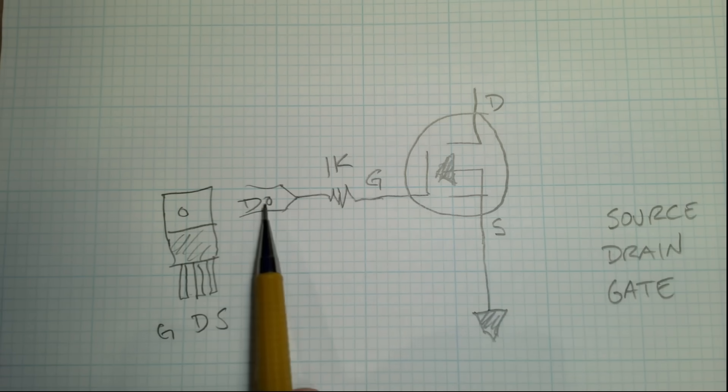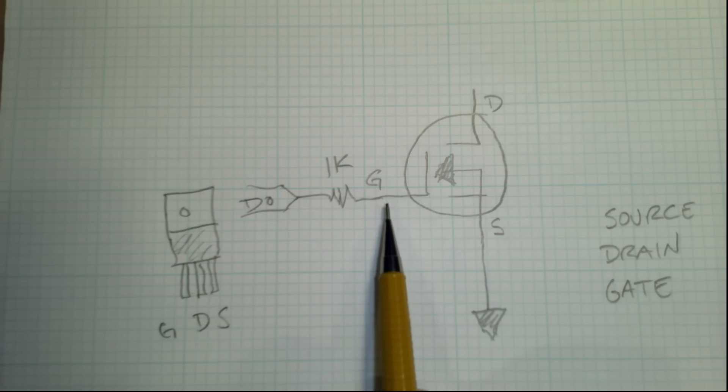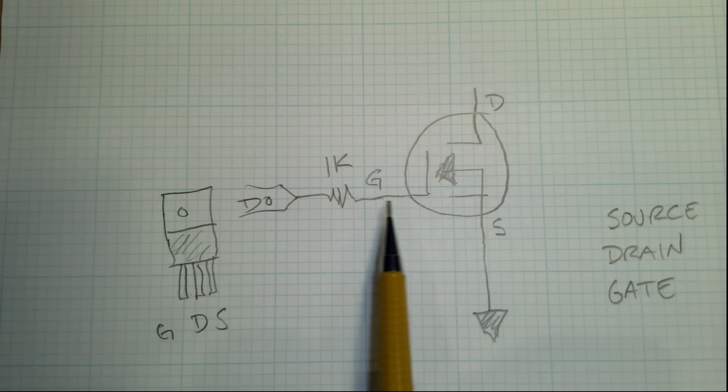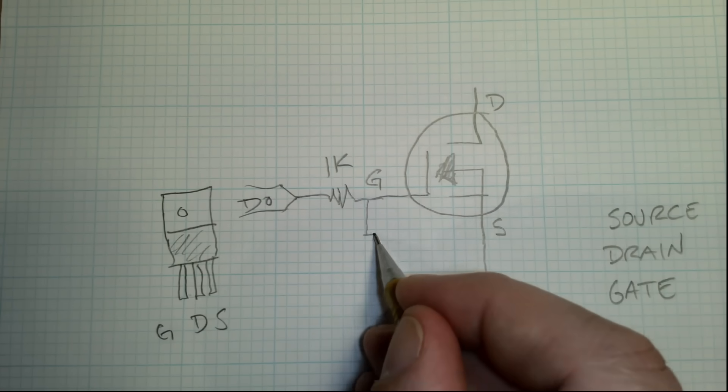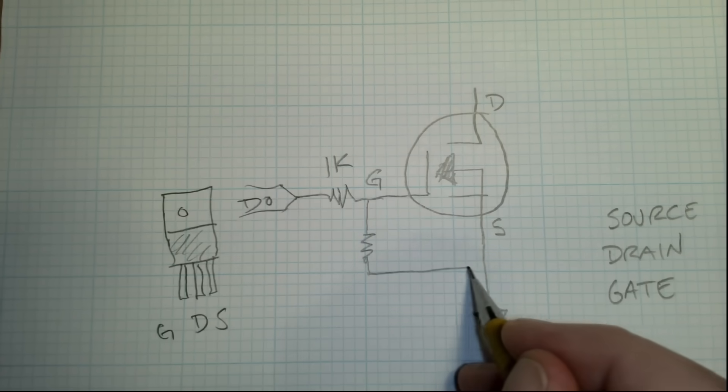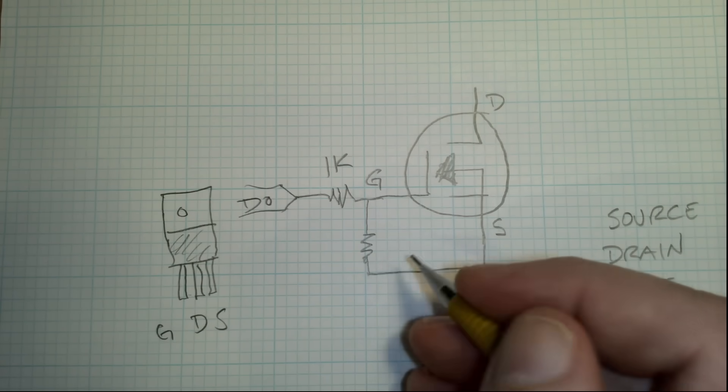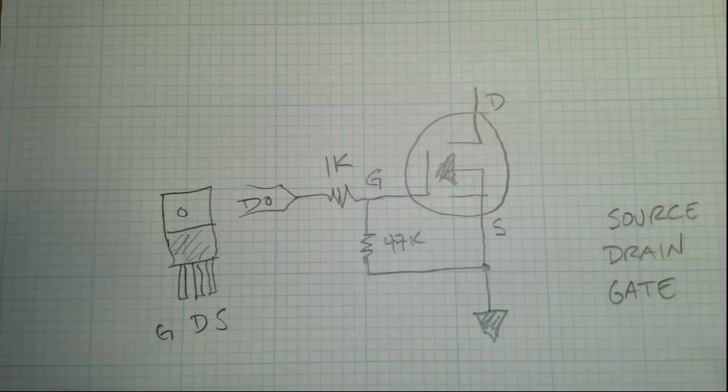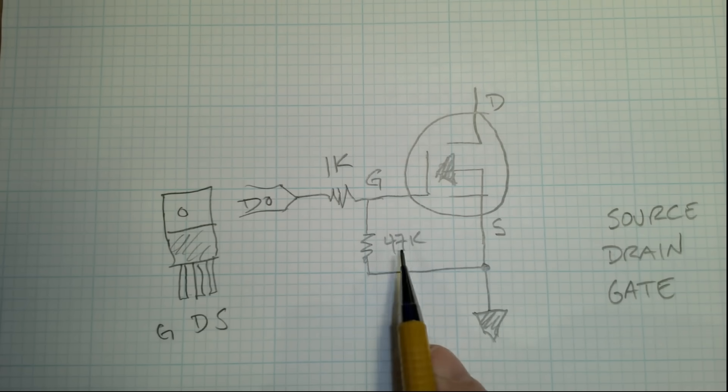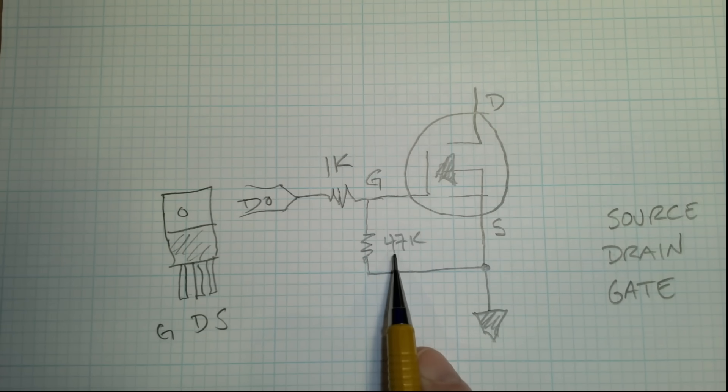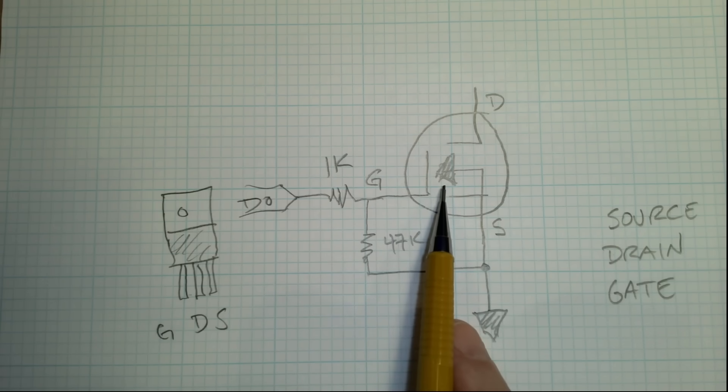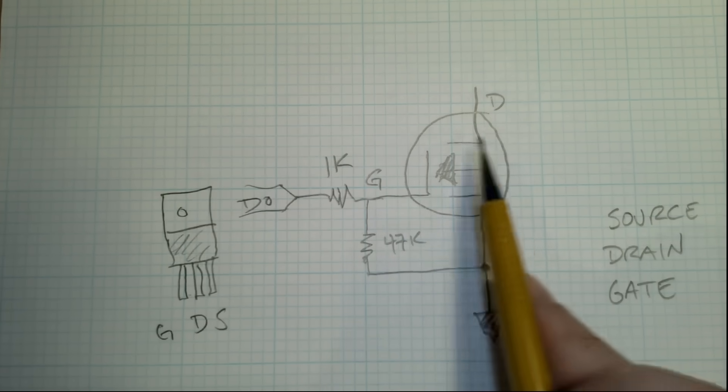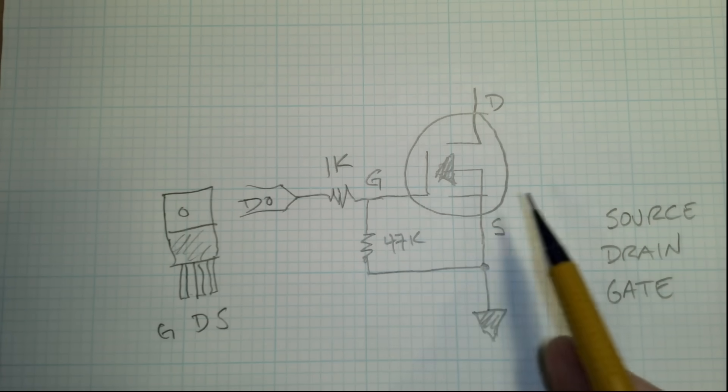Now, because when you power up, this might be in an unknown state, a floating state, what we want to do is we want to make sure that when this is not active, this is low. So we'll hook a pull-down resistor to this and connect it to ground as well. Somewhere around 47k is good. It doesn't have to be exact, but somewhere around 50k is a good pull-down for this. So this is, in normal situation, going to be pulled down. So this is going to be inactive and this is open. So this is acting like an open circuit to a relay. That's all there is to it.